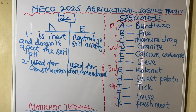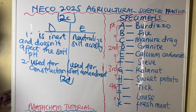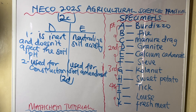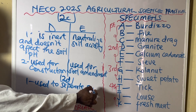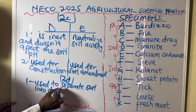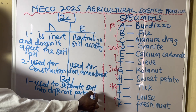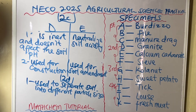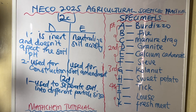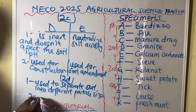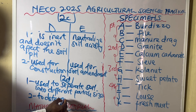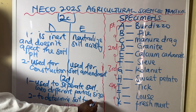Another question is to state two uses of specimen F — the sieve — in soil science. First, it can be used to separate soil into different particle sizes. Second, it can be used to determine soil texture class. Those are the two uses of the sieve in soil science.